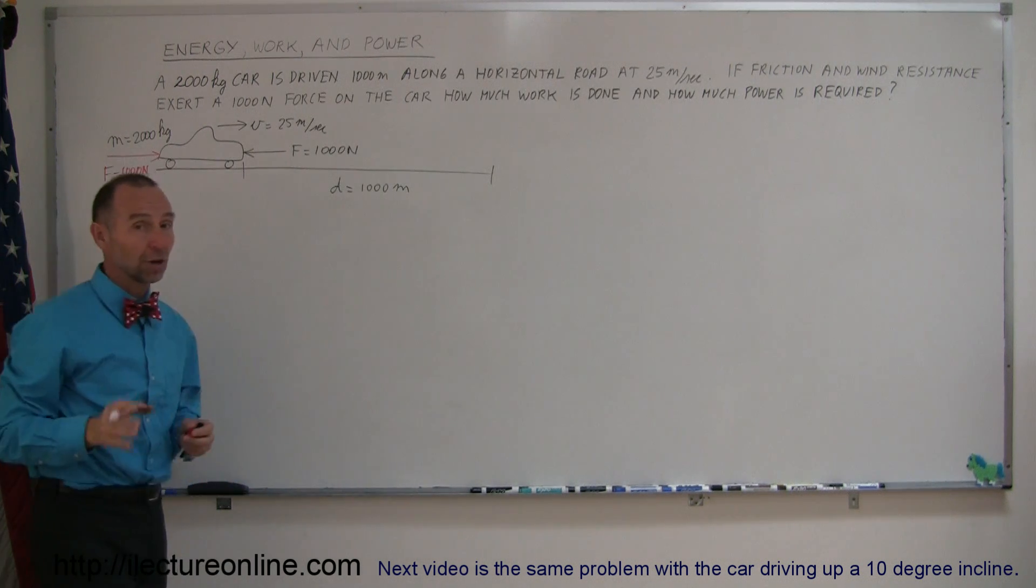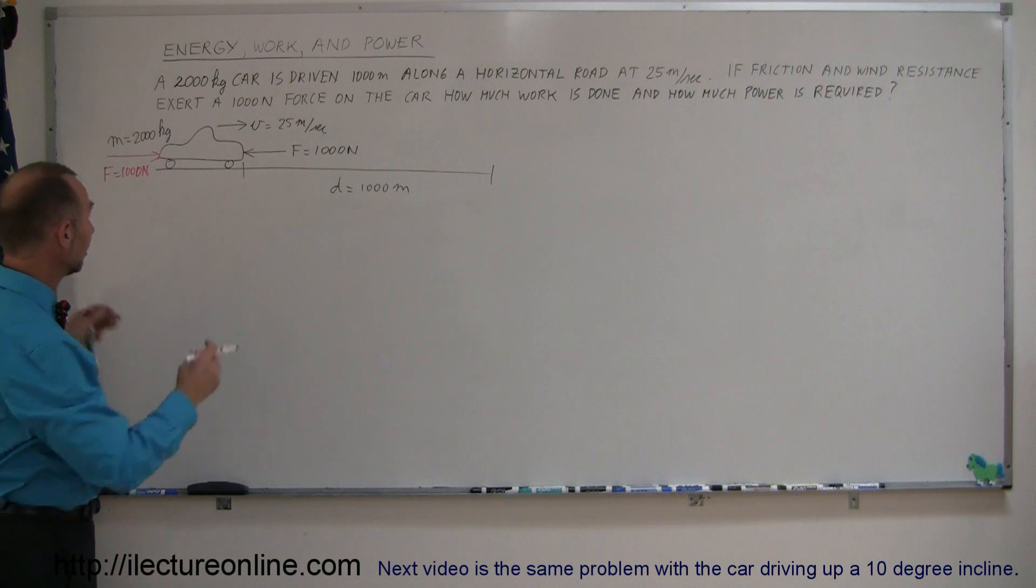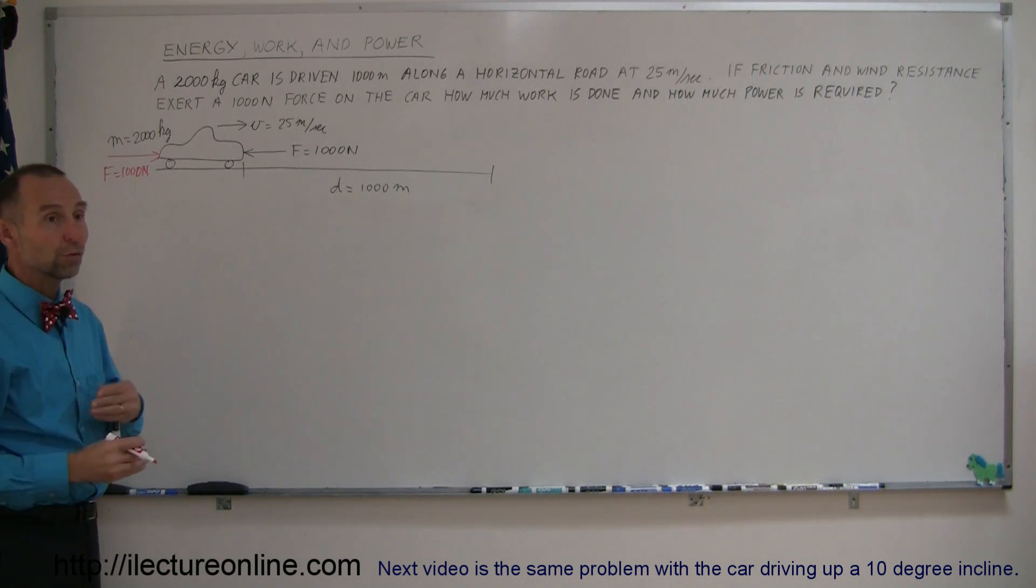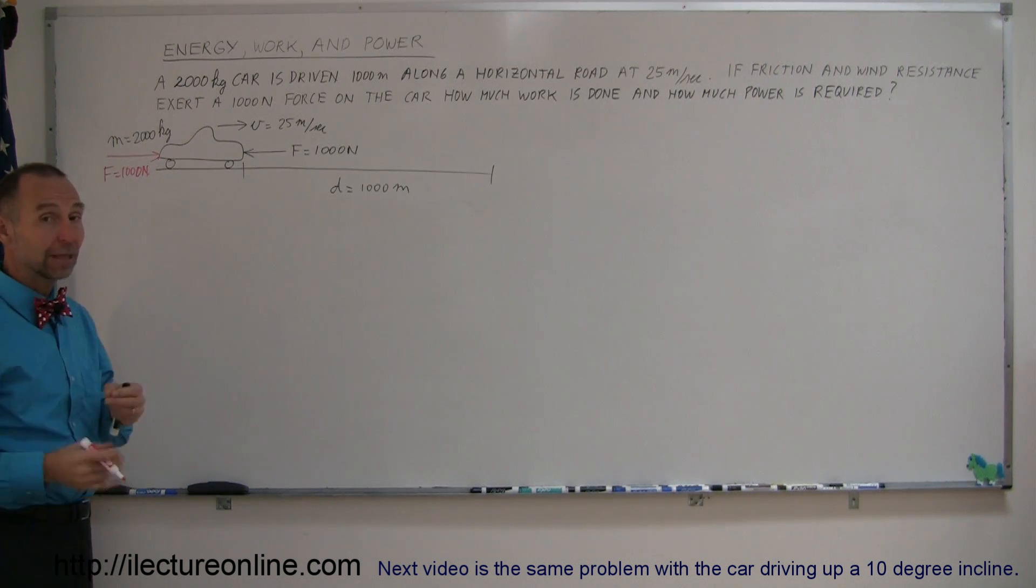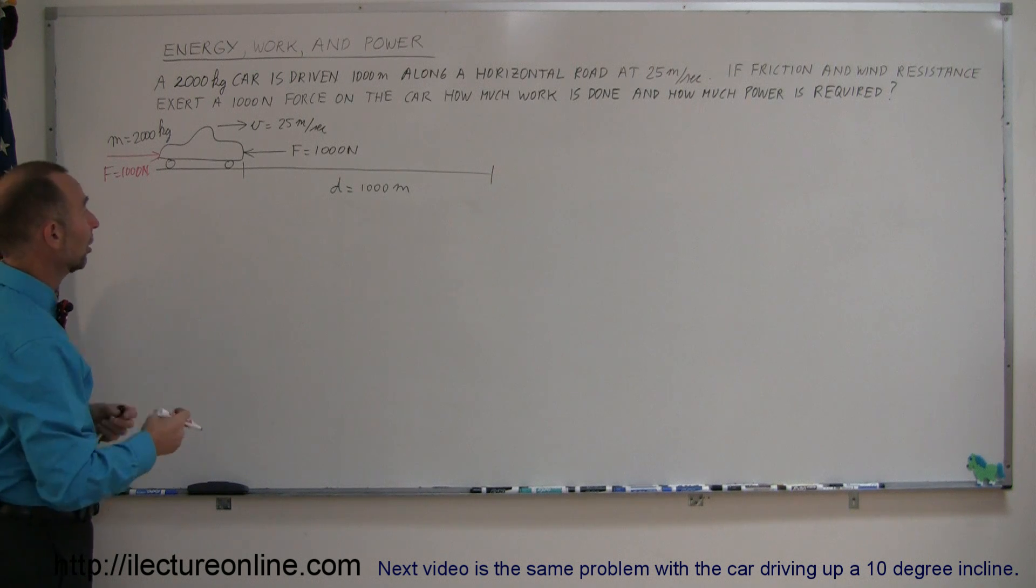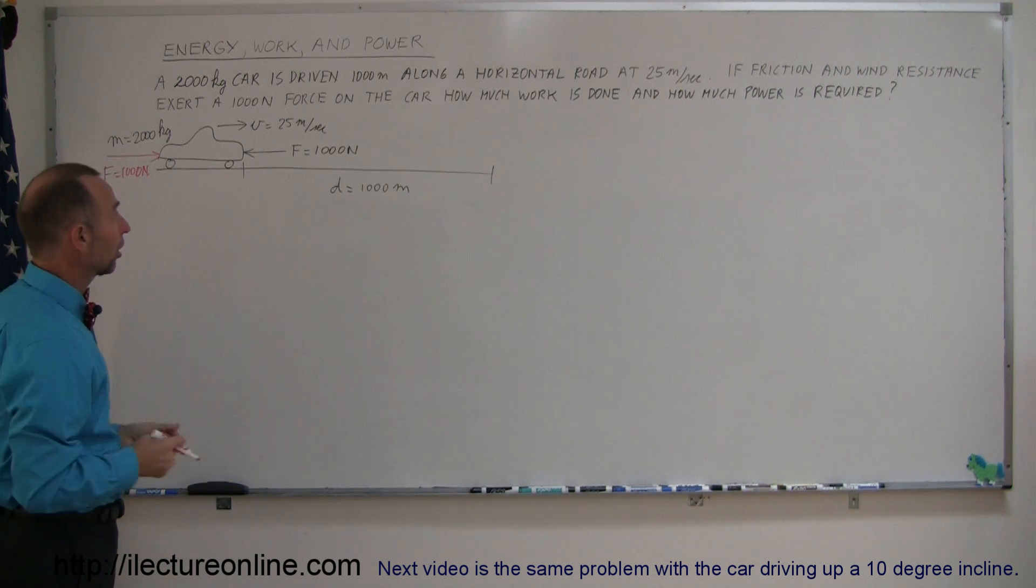That means there must be a force of 1,000 Newtons pushing the car forward. And so, at the time that the car reaches a speed of 25 meters per second, the two forces are balanced, there's no net force on the car, so there's no acceleration, either positive or negative acceleration. Where does that force come from? Well, that probably comes from the engine of the car, through the gears, pushing the car forward.